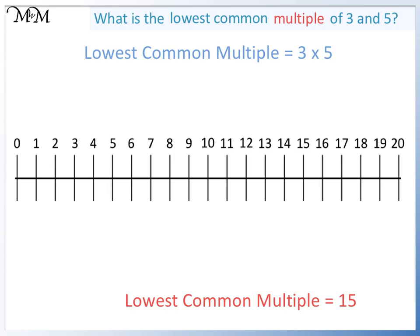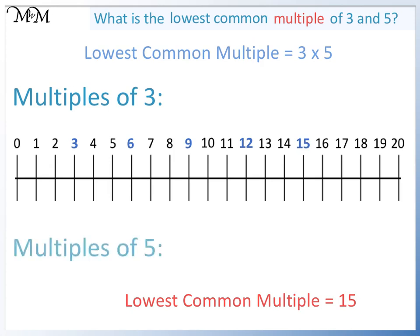To see this, the multiples of 3 are 3, 6, 9, 12, 15. The multiples of 5 are 5, 10 and 15.